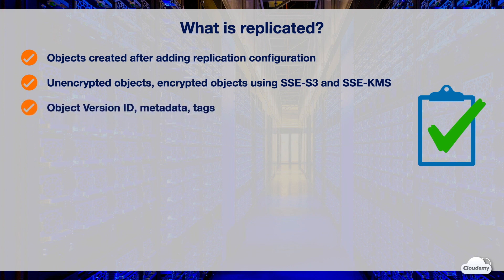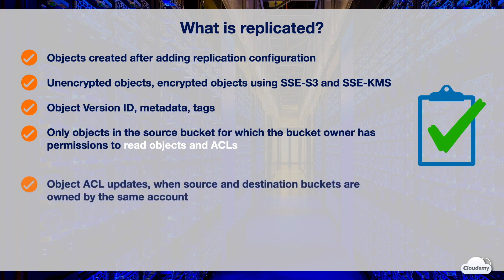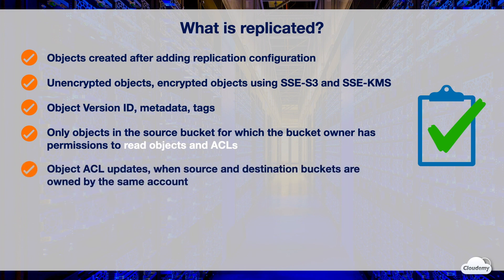S3 also replicates version IDs, metadata, and tags of objects. S3 only replicates objects in the source bucket for which the bucket owner has permissions to read both objects and ACLs. S3 replicates object ACL updates when both source and destination buckets are owned by the same account. The replication process can take a while until S3 brings both source and destination ACLs in sync, and it applies only to objects created after you enable replication on the bucket.